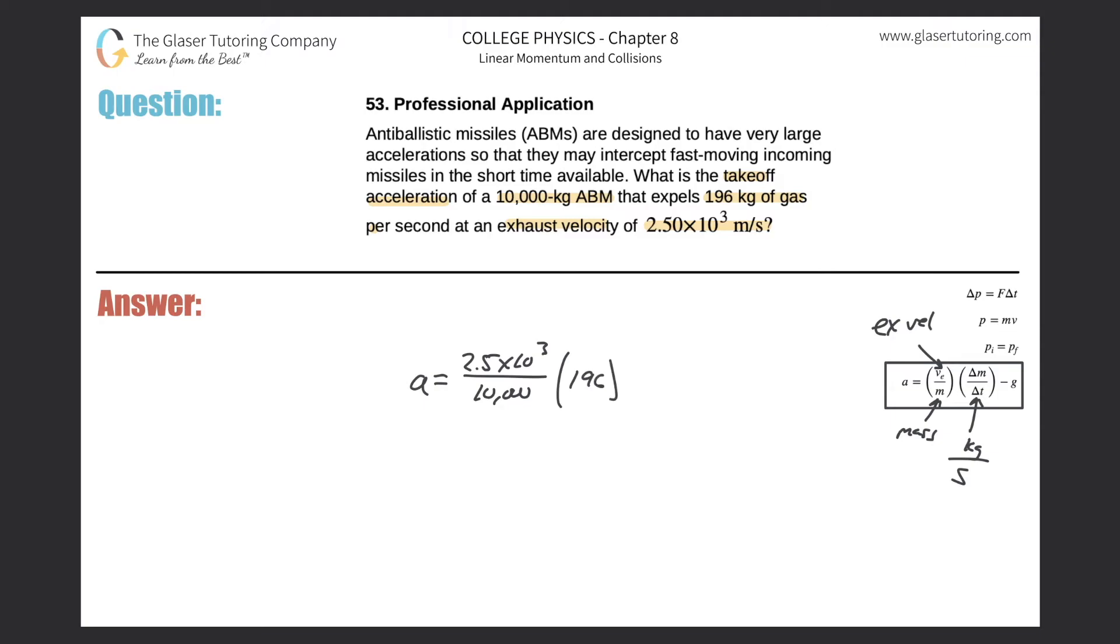Let me make it a little neater: 196, and then minus 9.80. So all we need to do is just plug that into the calculator: 2.5 times 10 to the 3 divided by 10,000 multiplied by 196, and then subtract 9.80 from it. 39.2.